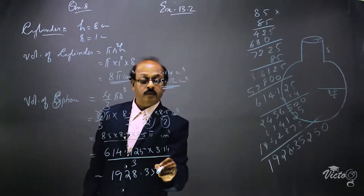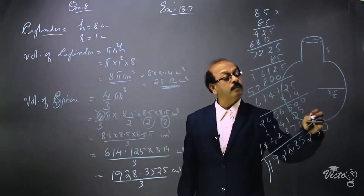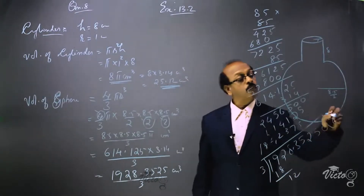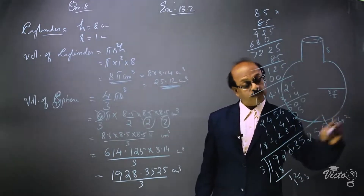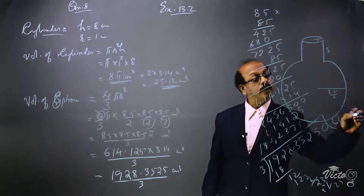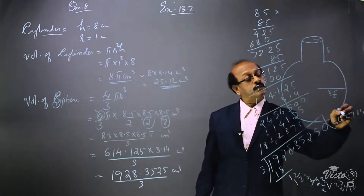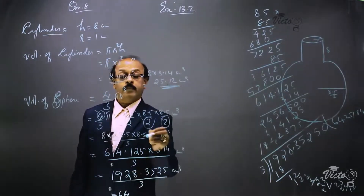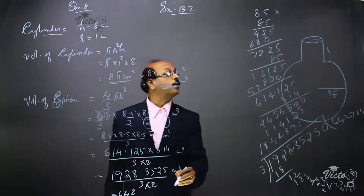Dividing 1928.3525 by 3: 3 into 19 gives 6, remainder 1; continuing the division we get approximately 642.784. Then we divide by 2 to get 321.392. So the volume of the spherical part is 321.392 centimeter cube, which we can take as 321.784 centimeter cube.